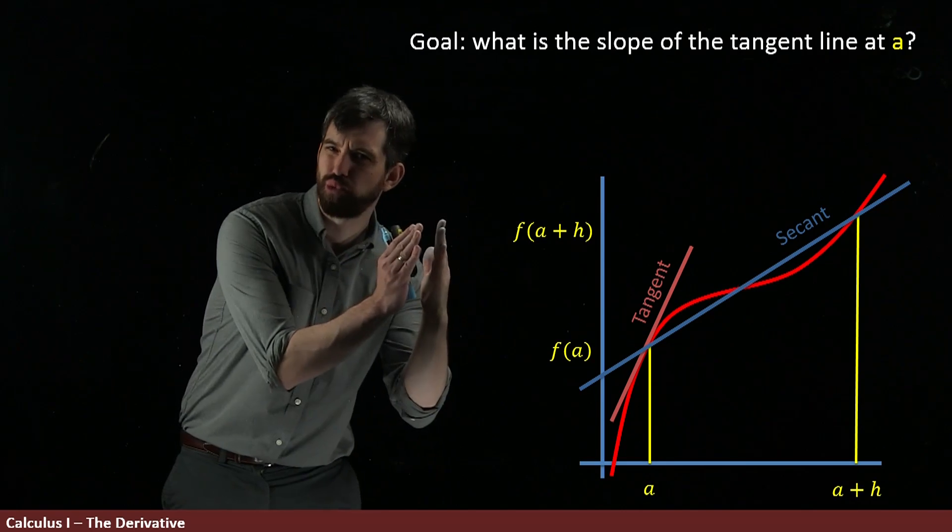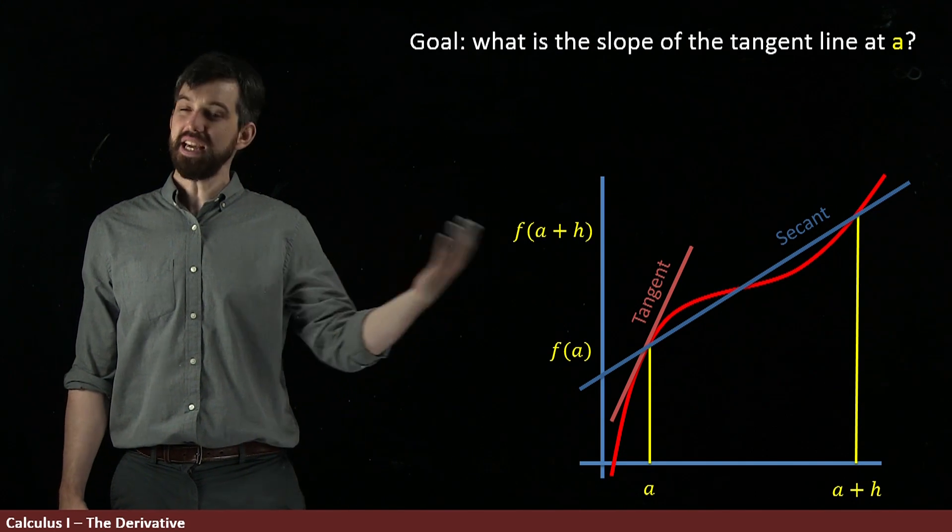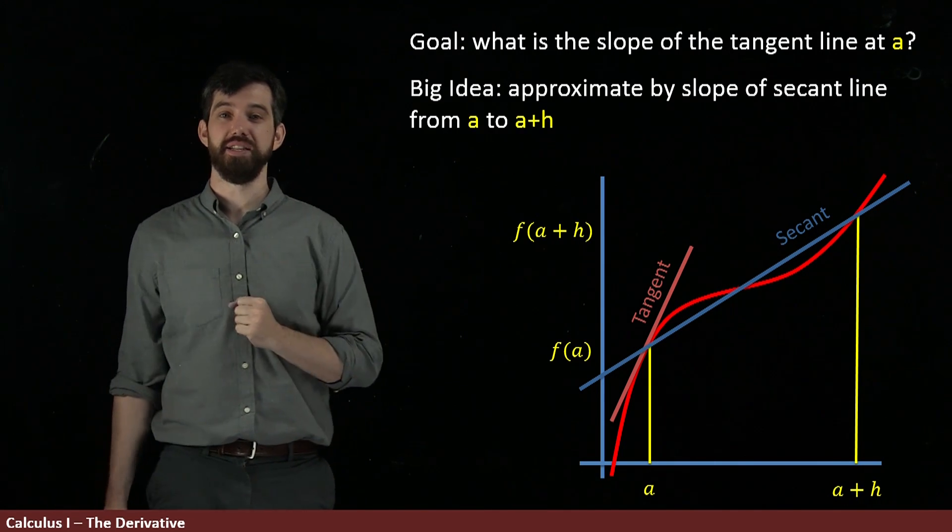Imagine h was really small. Imagine your points were like right close together. Then my claim is that the secant line and the tangent line are pretty good approximation.